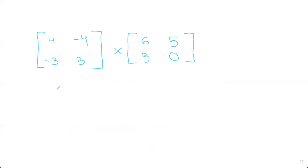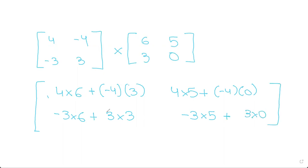So again, we multiply 4 into 6 plus minus 4 into 3. 4 into 6 plus minus 4 into 3, so this will be our top left. Now you do minus 3 into 6 plus 3 into 3. And now here you do 4 into 5 plus minus 4 into 0. And then finally you do minus 3 into 5 plus 3 into 0. So this is our matrix now.